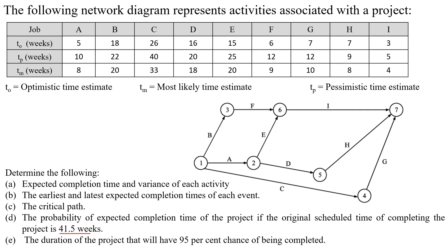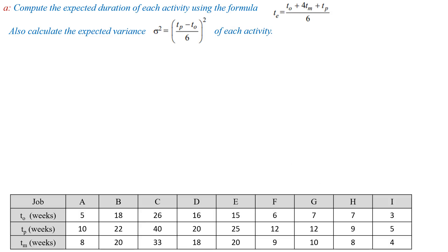Finally, we also have to determine the duration of the project that will have a 90% chance of being completed. To find the solution, first we calculate the expected duration of each activity using the formula: Te = (T0 + 4Tm + Tp) / 6. We also calculate the expected variance sigma² using the formula: ((Tp − T0) / 6)²  for each activity.